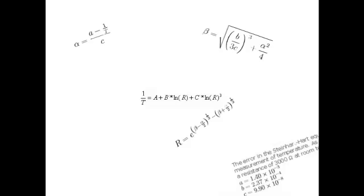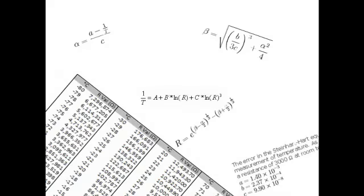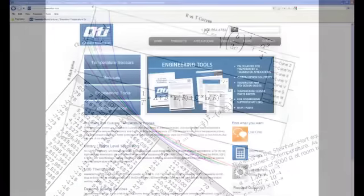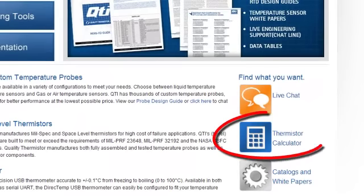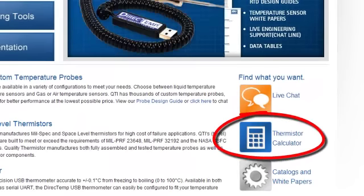The textbook answer is to use the Steinhardt-Heart formula. However, using this formula can be a bit challenging. To help our customers, QTI has created an NTC thermistor calculator. There is a link to our calculator on each page of our website.